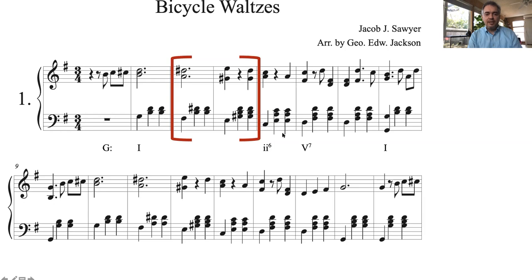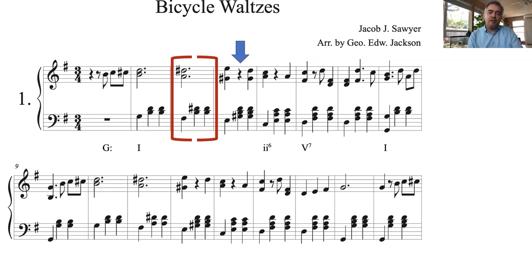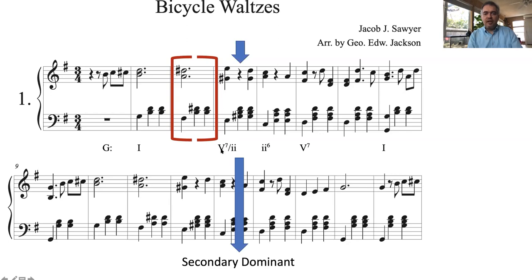And now if we look at this measure and analyze the pitches we have — E, G-sharp, B, D — E, G-sharp, B, D creates a major-minor seventh chord. Major-minor seventh chords almost always function as a dominant, but it is obviously not the dominant in the key of G major. It's a dominant that would tonicize a note that is a perfect fifth below E, and that would be A. A in the key of G is scale degree 2. It goes to A here. So this, in fact, is a V7 of II, and we call it a secondary dominant.